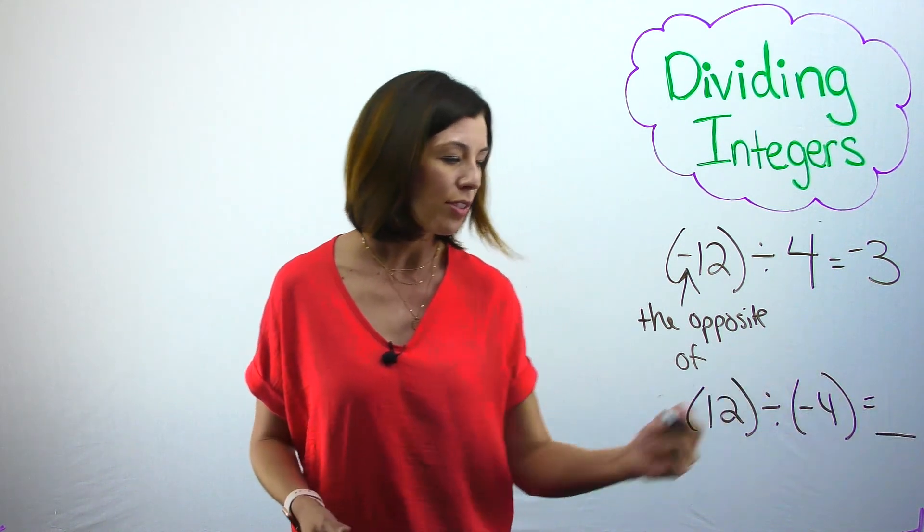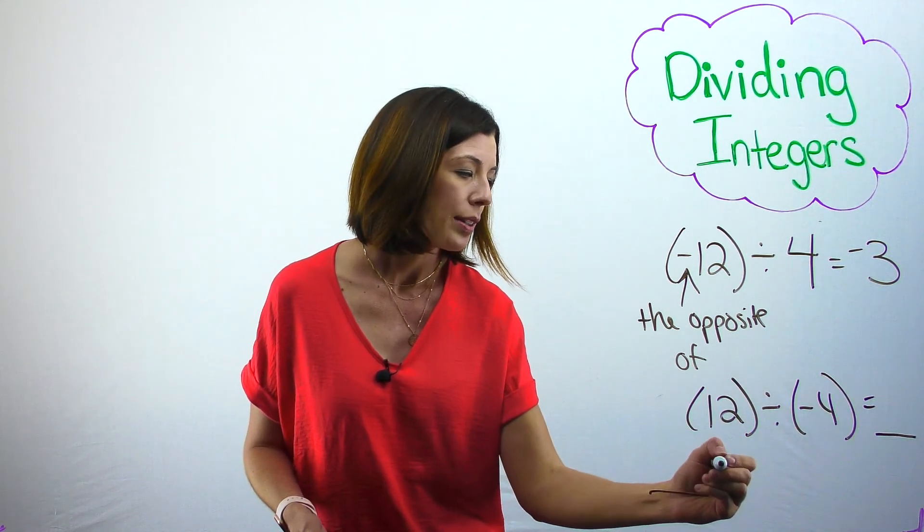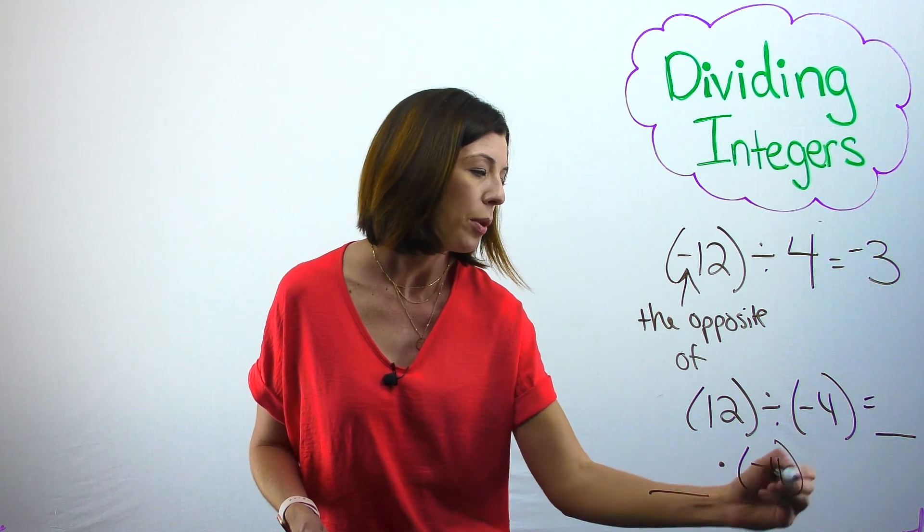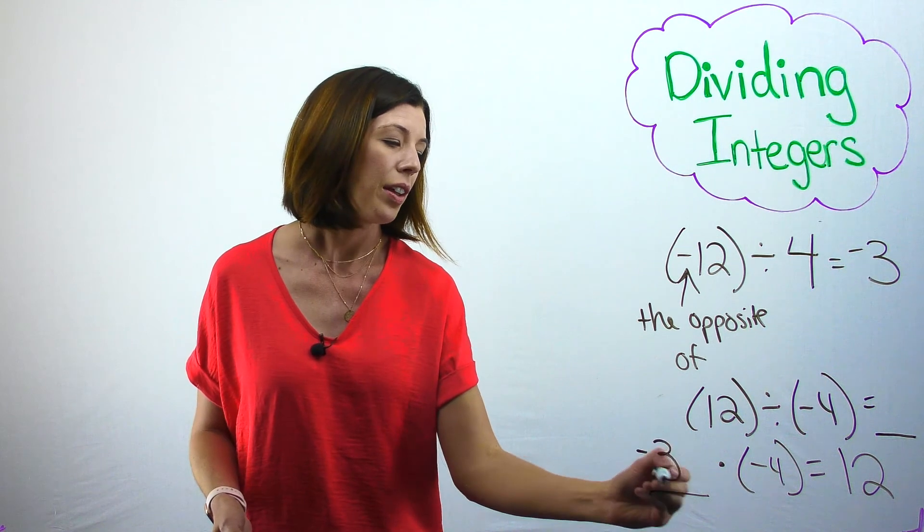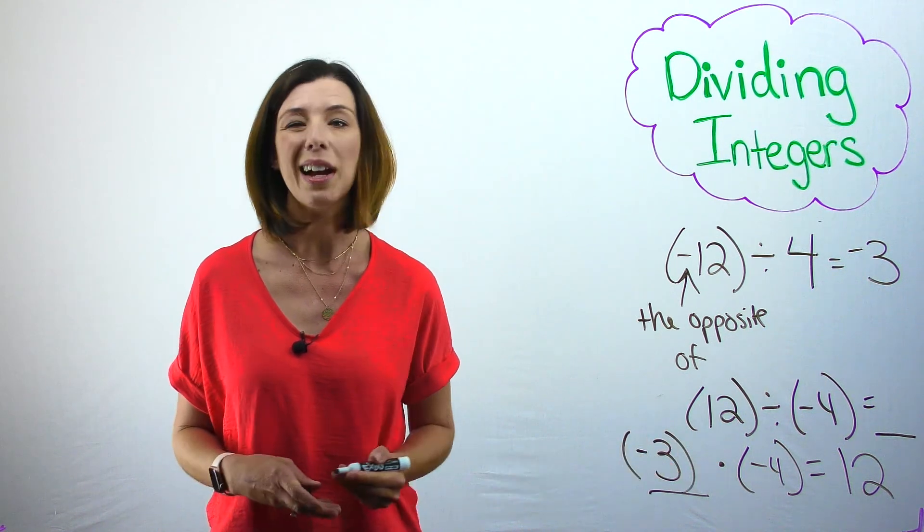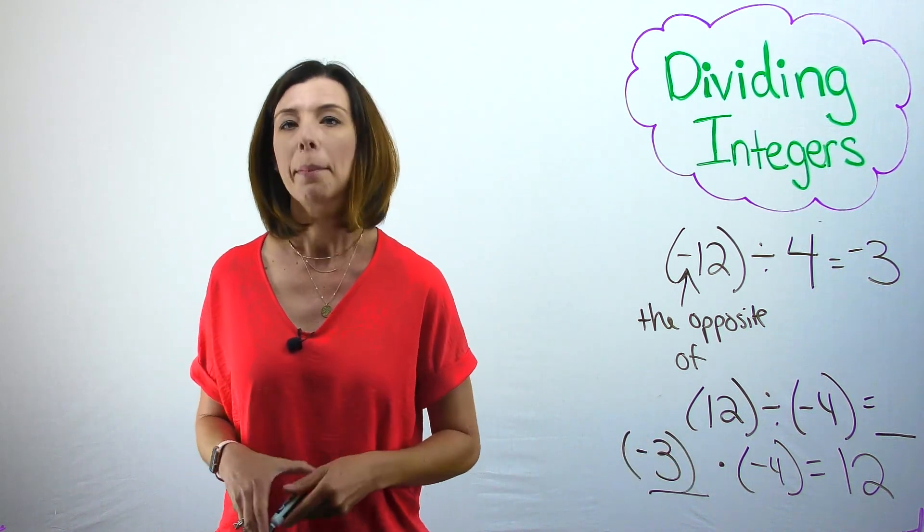So in other words, I'm thinking what number times negative 4 would give me a positive 12. And obviously then I can figure out that if I have negative 3 times negative 4, I get positive 12.